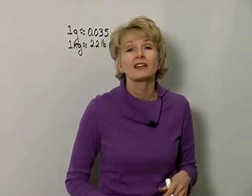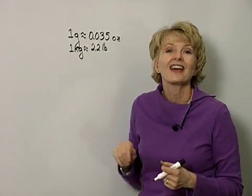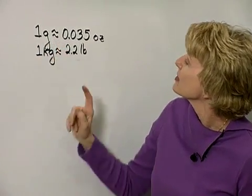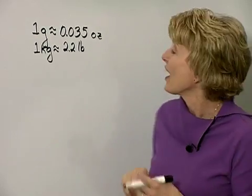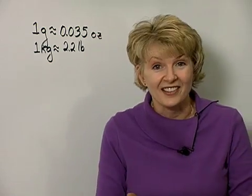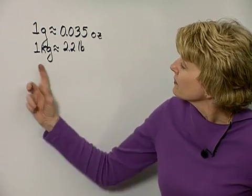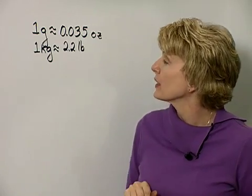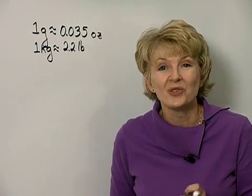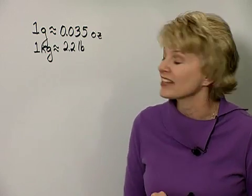We want to convert from the U.S. customary system to the metric system and vice versa, so we need some conversions. Here are some approximations: one gram is approximately thirty-five thousandths of an ounce. Also, a kilogram is approximately two and two-tenths pounds — this will help you when converting between kilograms and pounds.